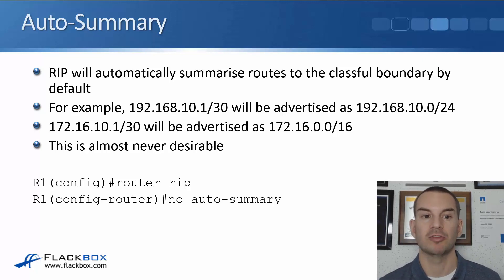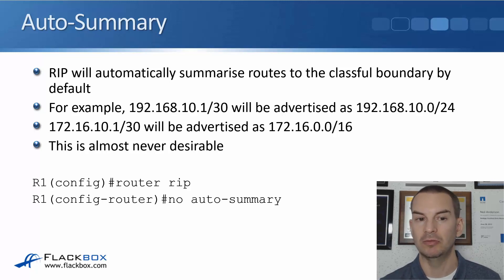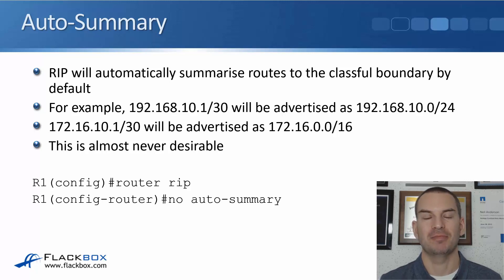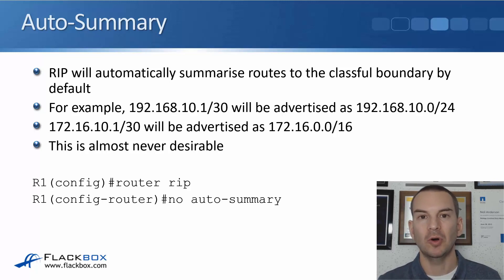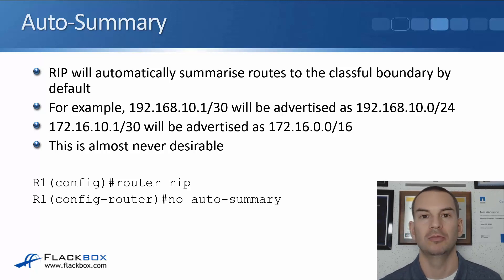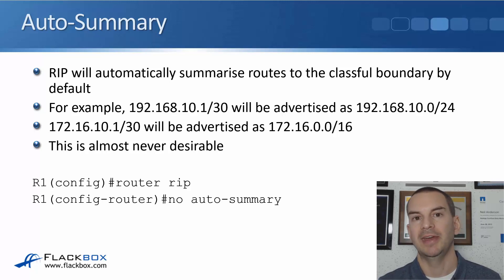Similarly, an interface with 172.16.10.1/30 would be advertised as 172.16.0.0/16, because that's a Class B address defaulting to slash 16. This is almost never desirable — modern real networks aren't designed so that summarization falls exactly on classful boundaries. Leaving auto-summary on is liable to cause havoc, possibly blackholing traffic. So we always disable auto-summary with the commands 'router rip' then 'no auto-summary'.